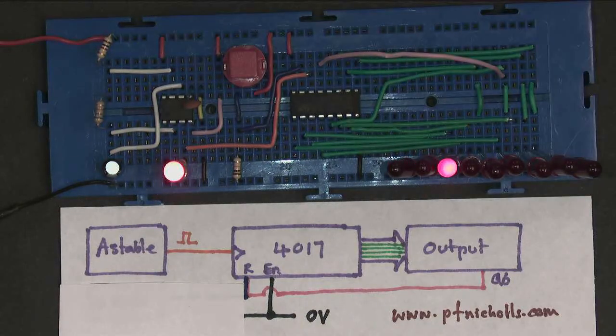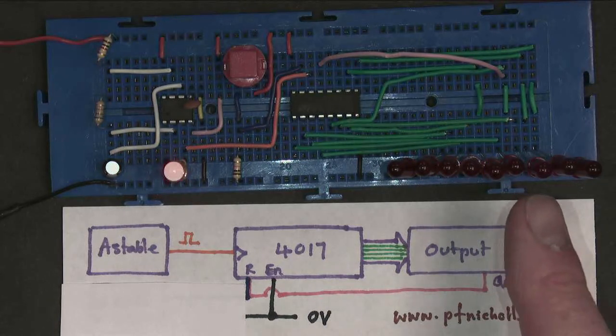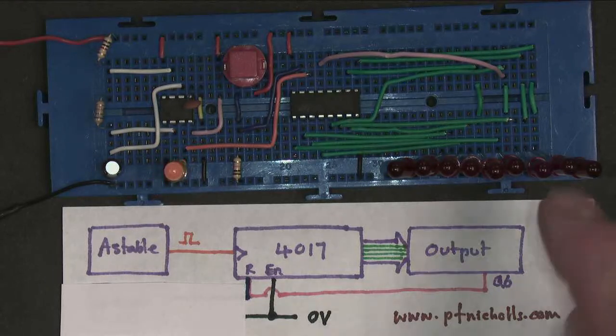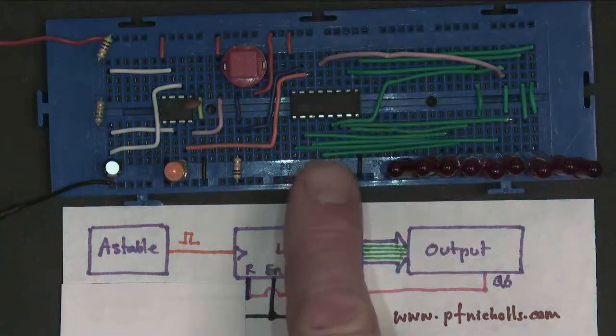Reset it. It counts as expected, but it gets to output Q6, which is now connected to the enable. The Q6 has gone high. The enable has gone high. The counter has stopped counting.